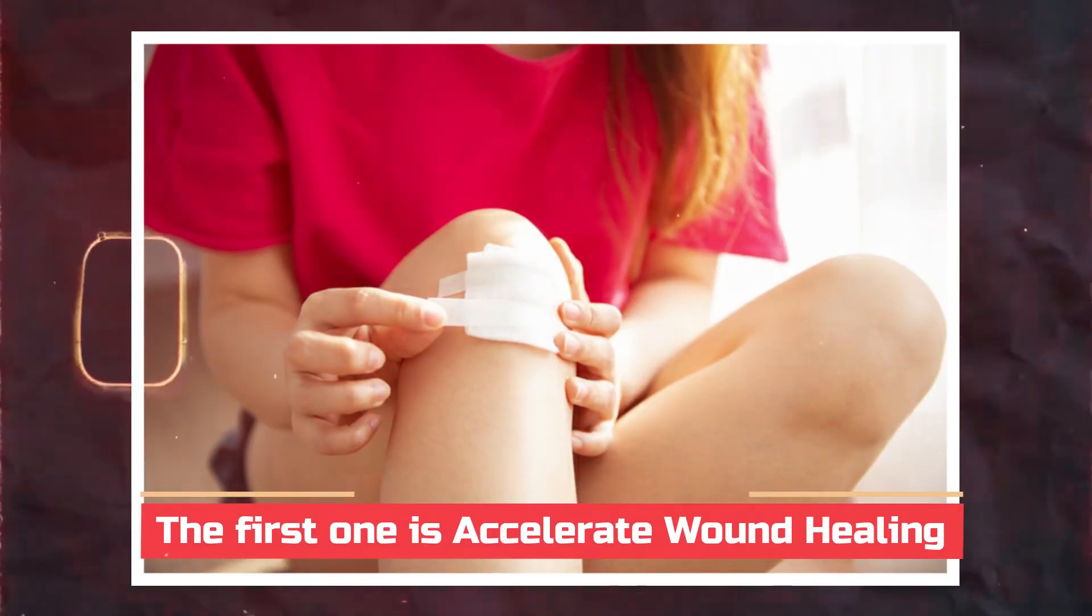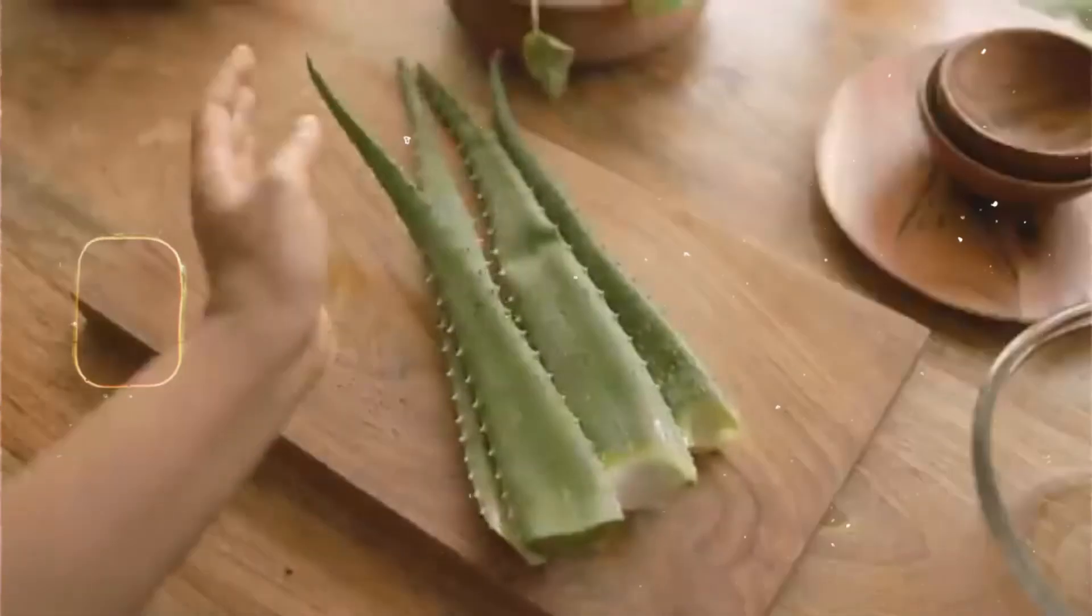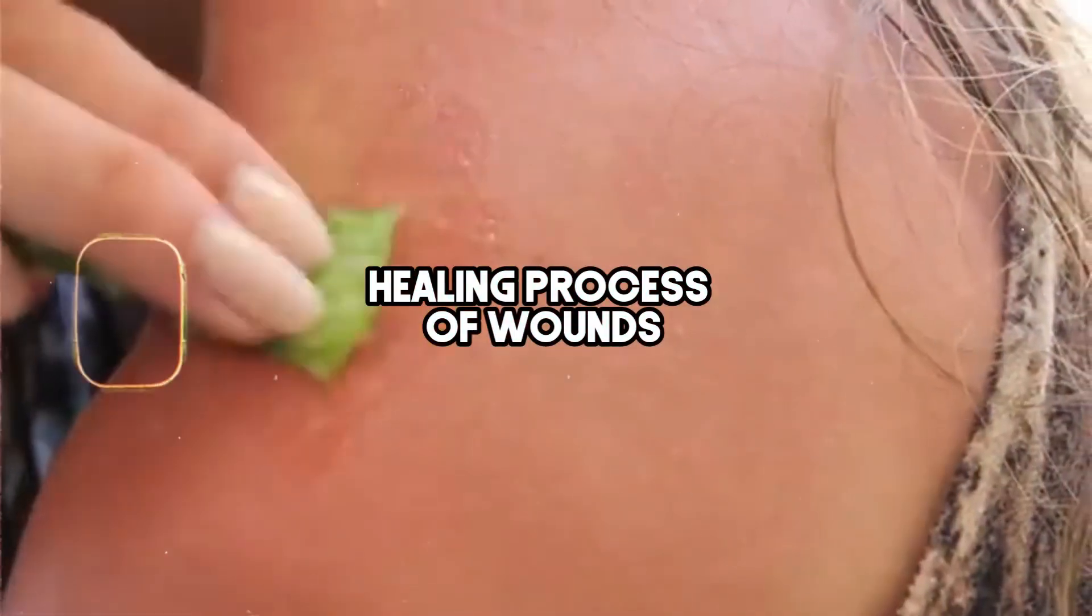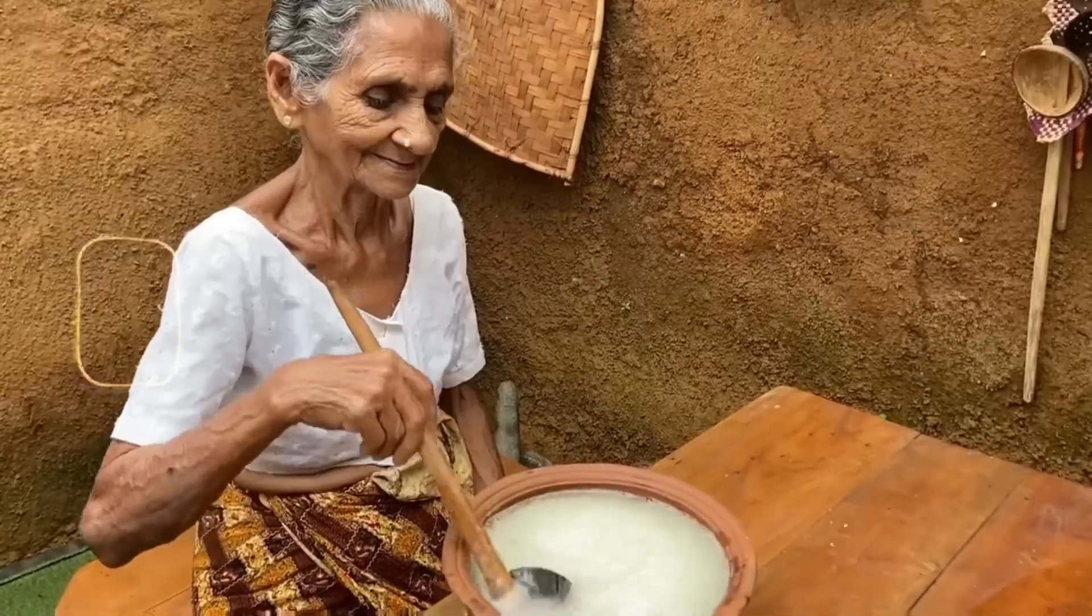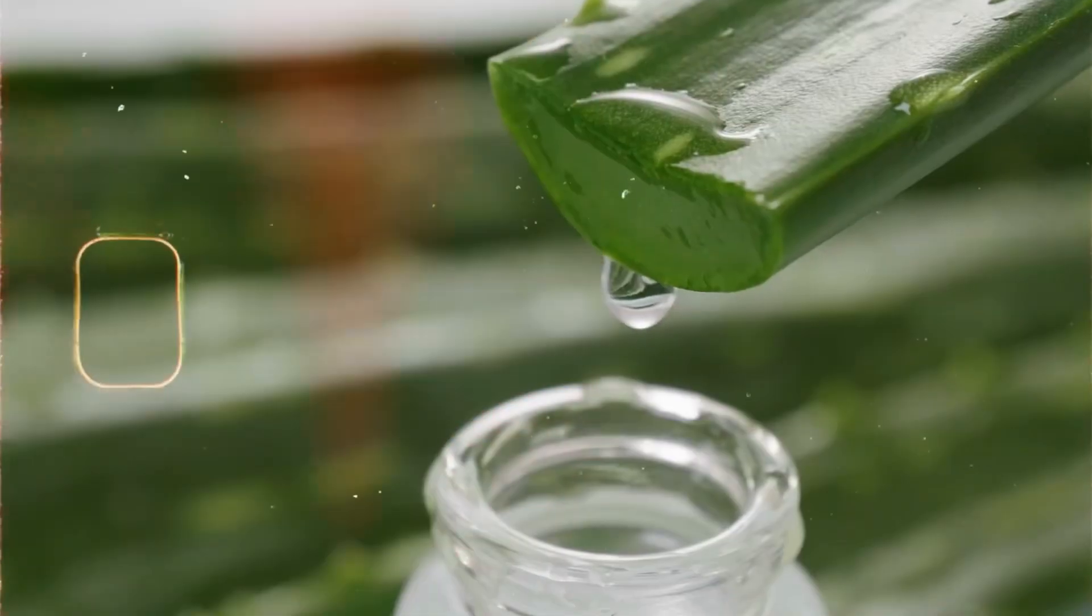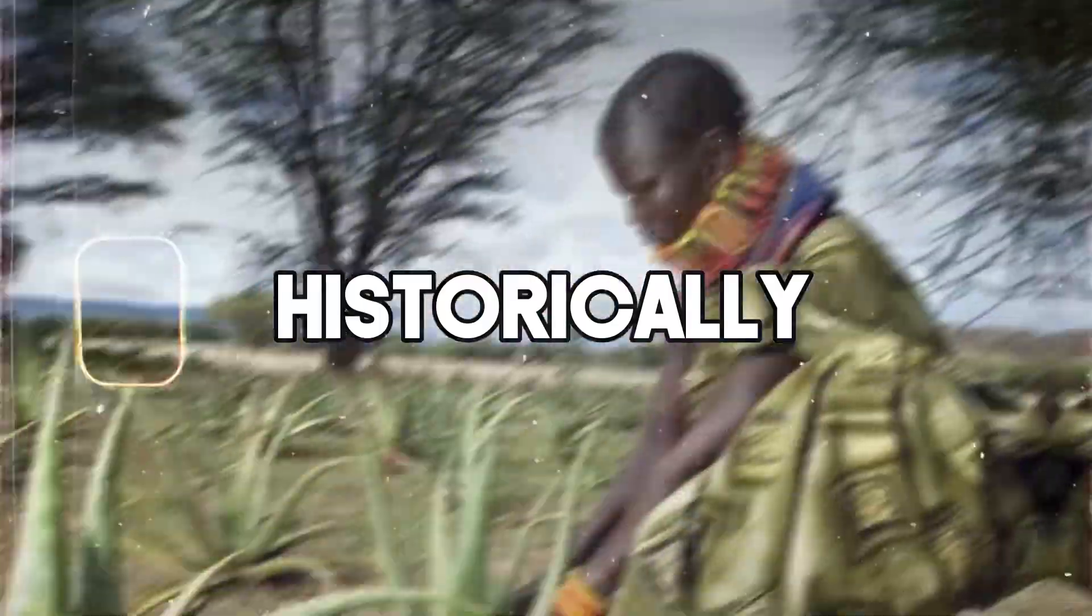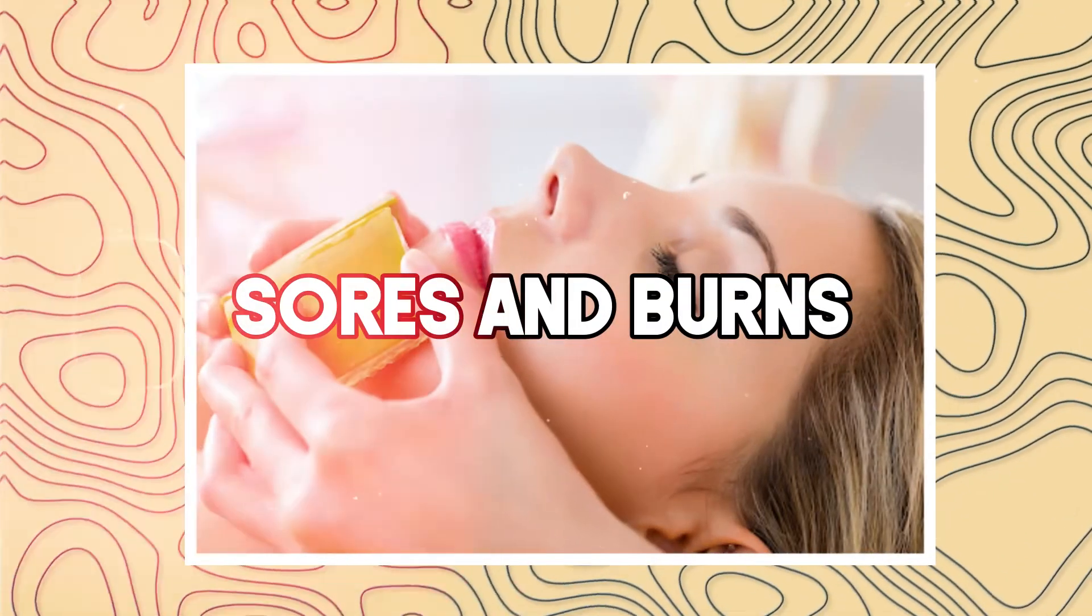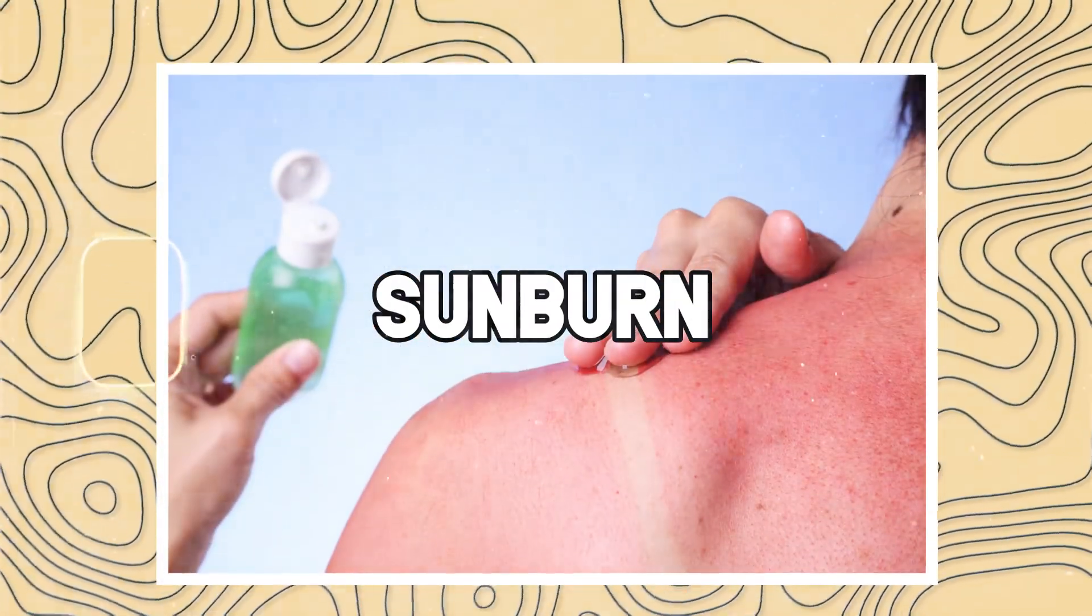The first one is accelerate wound healing. Aloe vera is widely recognized for its powerful ability to speed up the healing process of wounds. People typically use it as a topical medication, applying it directly to the skin rather than ingesting it. Historically, aloe vera has been used to treat various skin conditions, especially sores and burns, including sunburn.